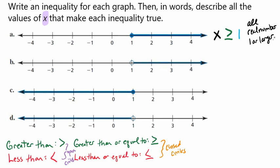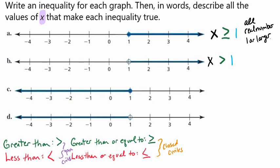Let's look at letter B. We're still going to use X and still have the number 1, since our circle is at the number 1, and our line is still pointing to the right. But it's an open circle, so there won't be any line under it. We might say X is at least 1, but that's a problem because it can't be 1. So X is greater than 1.